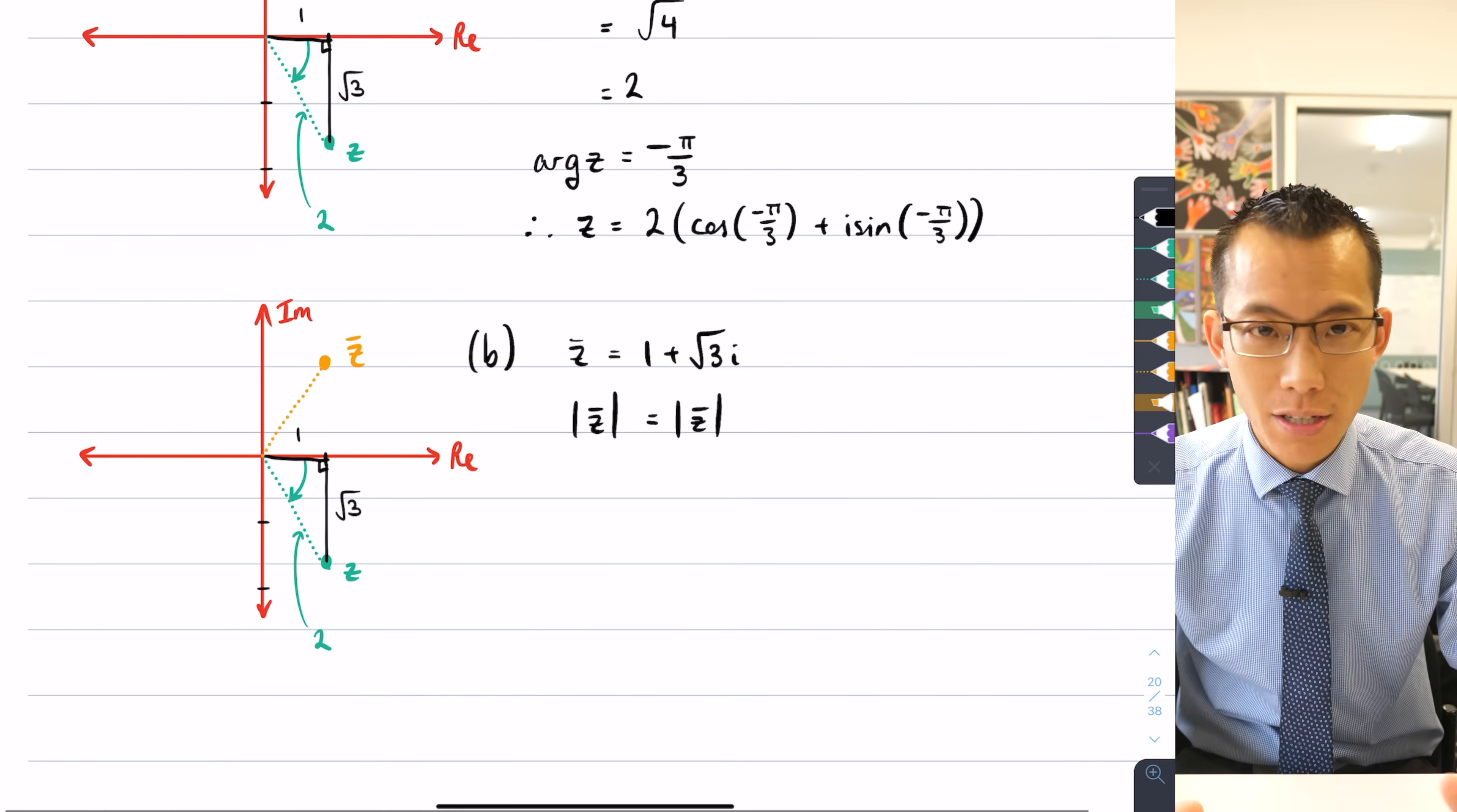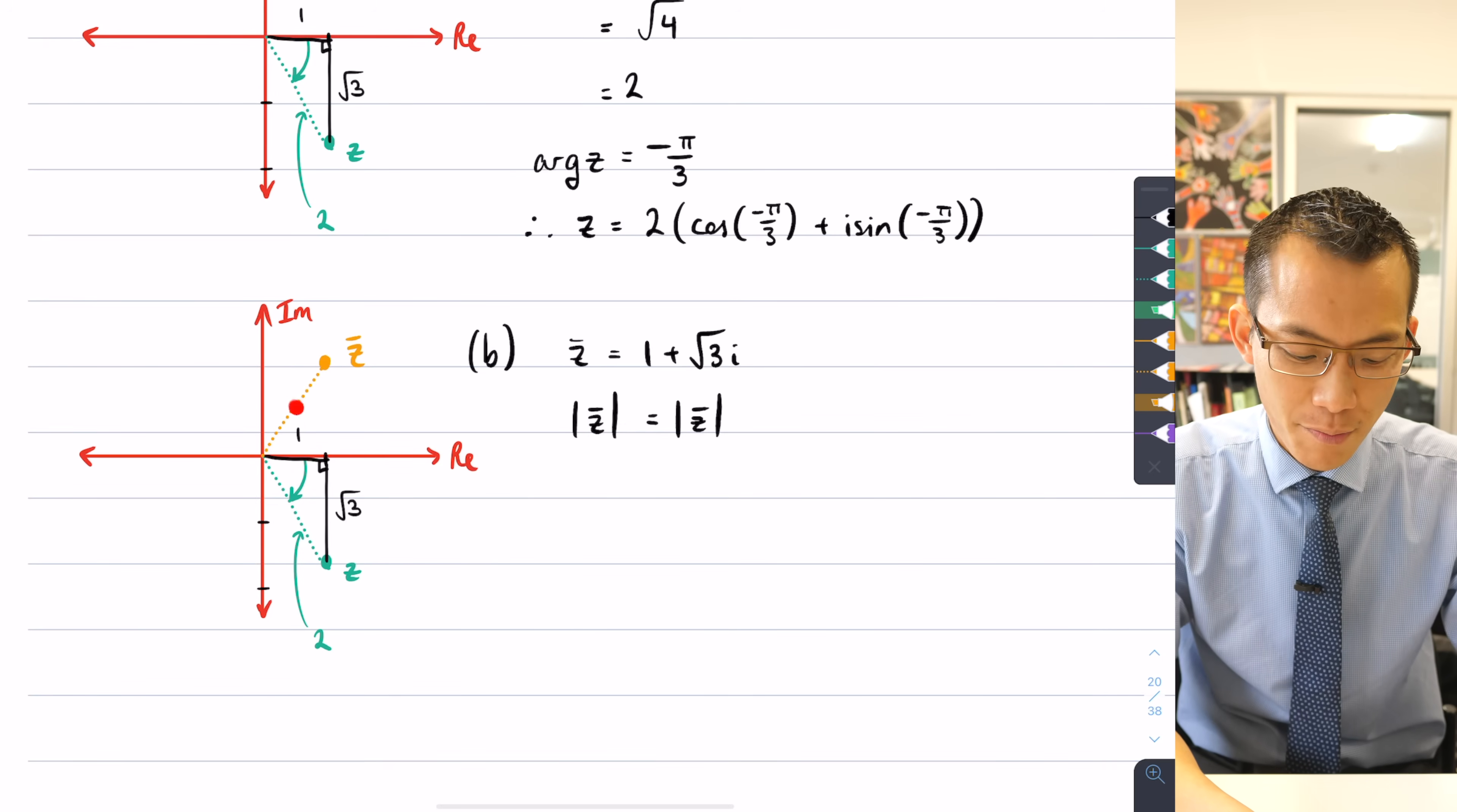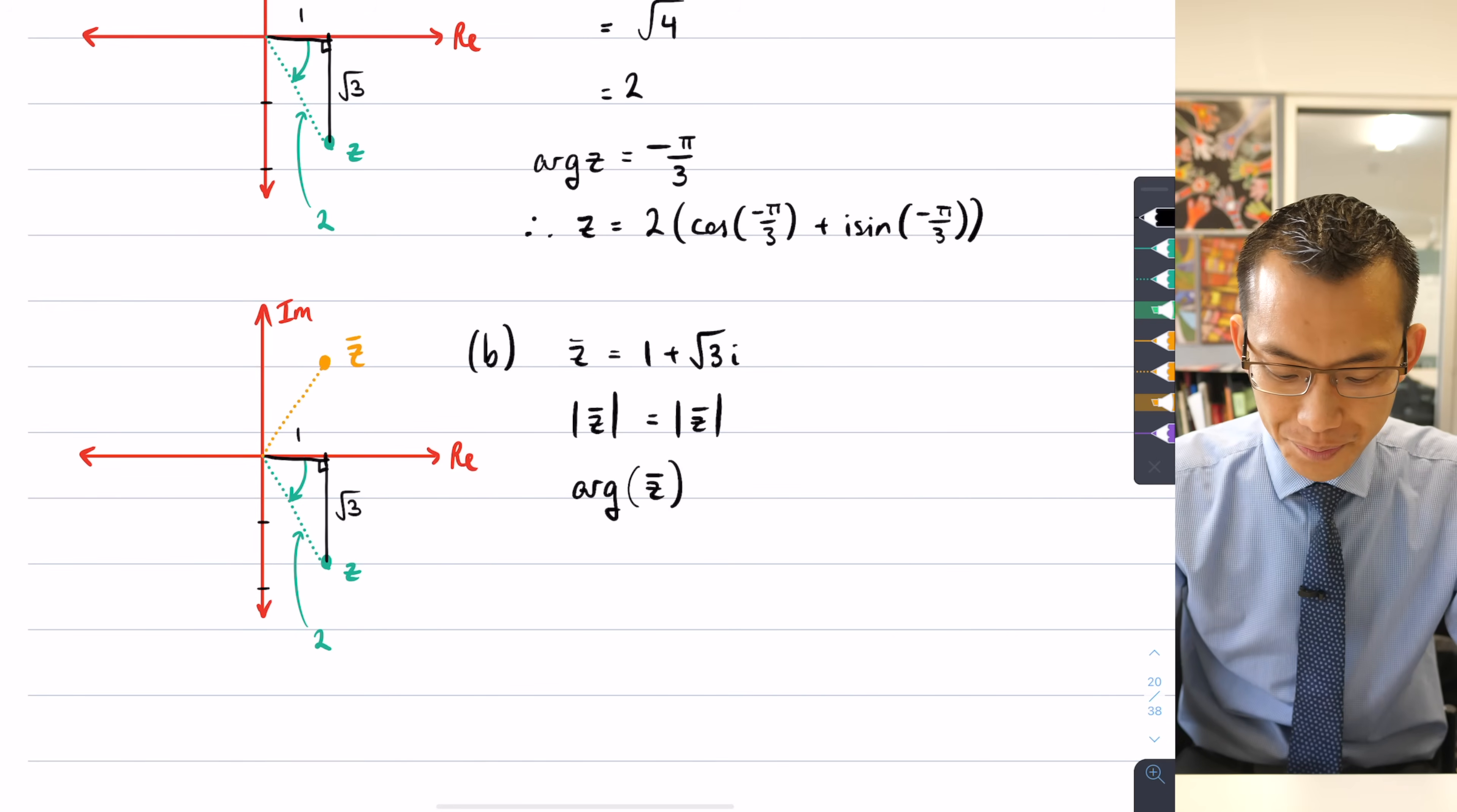But when it comes to the angle, something is different. I have the same size of angle, I would say the same magnitude, but it's going in the opposite direction. So instead of -π/3 going this way, I'm going to have positive π/3 going this way.